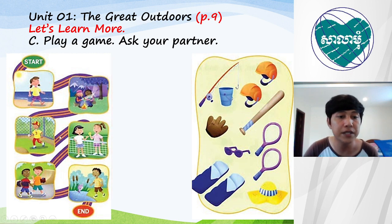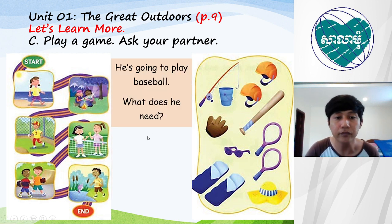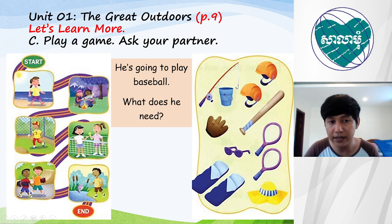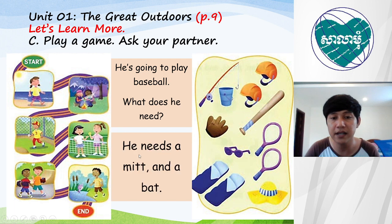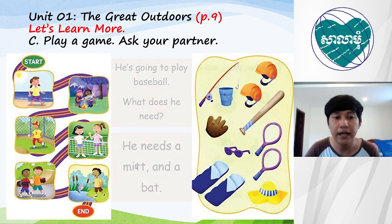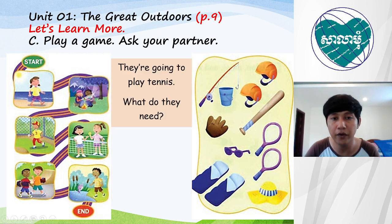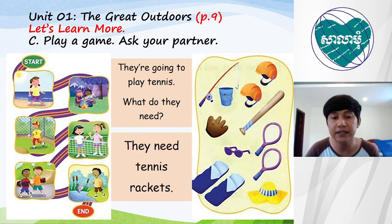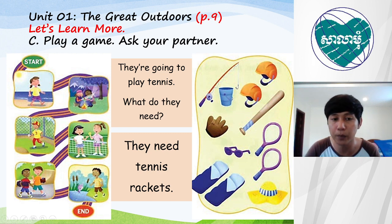Look at picture number three — he's going to play baseball. What does he need? The answer: he needs a mitt and a bat. Very good. Next, look at picture number four — they are going to play tennis. What do they need? The answer: they need tennis rackets because they have only the tennis ball but they don't have a tennis racket.